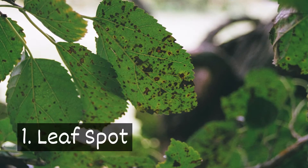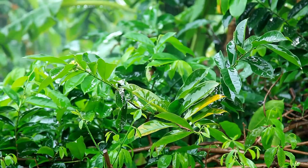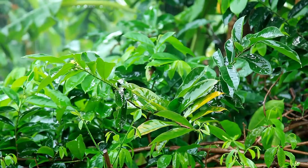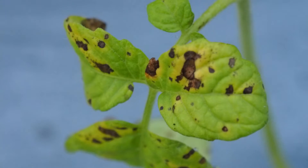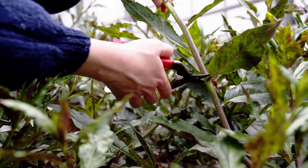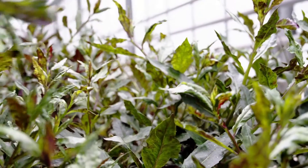One, leaf spot. Leaf spot is usually present when it's rainy and warm. Brown or dark spots appear on leaves, eventually leading to the leaf dying. It can spread to other plants, so make sure to prune infected leaves.